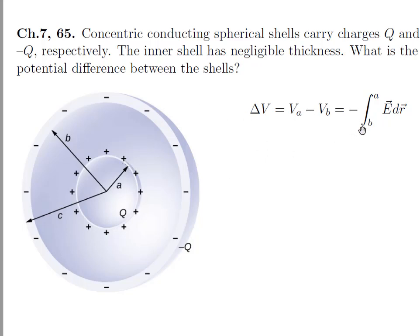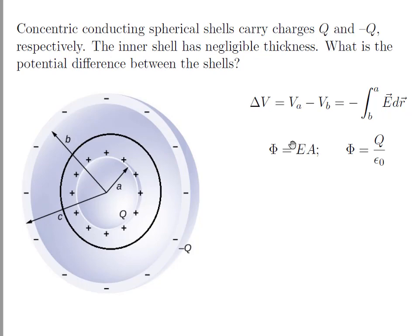The potential difference VA minus VB equals minus integral from a to b of E dr. This electric field is expressed using Gauss's law. So the Gaussian surface, I can choose the Gaussian surface here.